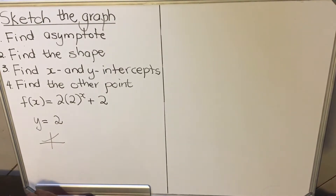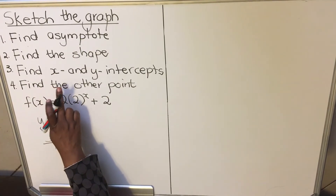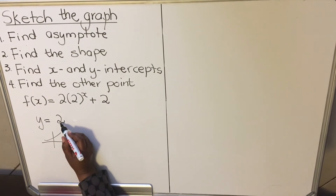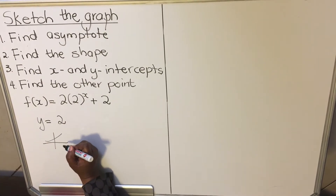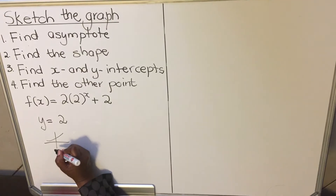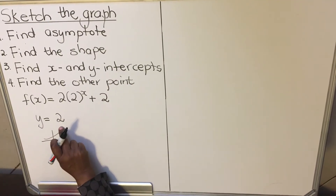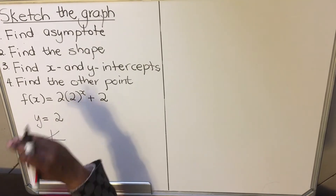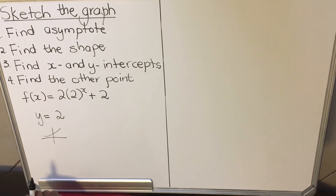Next, find the x and y intercepts. If your graph looks like that and your asymptote is y = 2, it means the graph will not touch the x-axis — you don't have to calculate the x-intercept. That's why you need to find the shape first. The asymptote is the line the graph goes towards and doesn't touch, so it will not cross the asymptote. Since a is positive, the graph is above y = 2, so we only find the y-intercept.